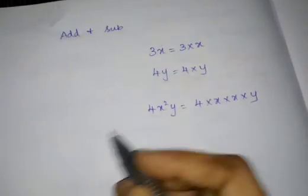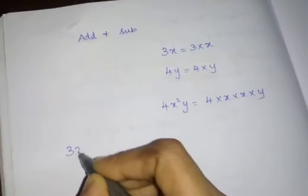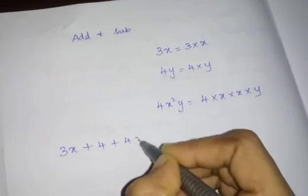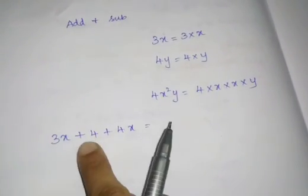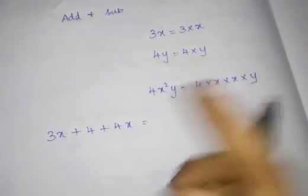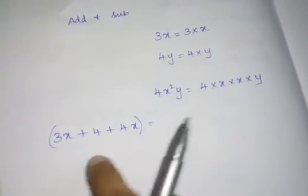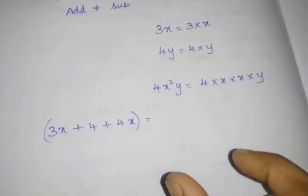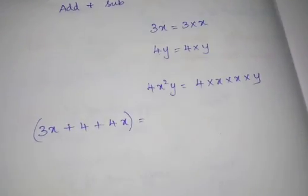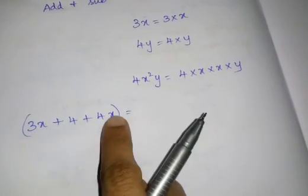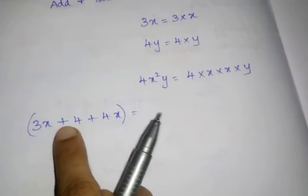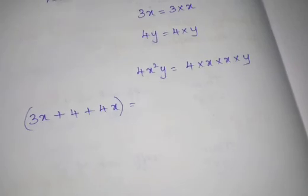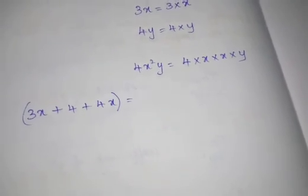When I am going to add 3x + 4 + 4x, I am going to simplify this expression. You know this is an expression, right? Here, in between all the three terms, the plus sign is given, so we are going to add all three things. That is our main concept.